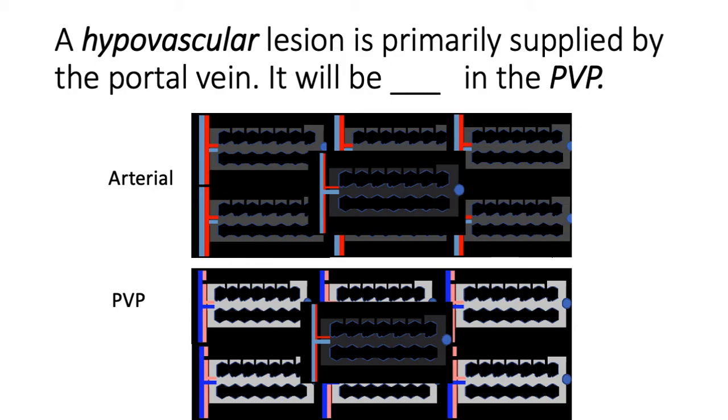So even though the hypovascular lesion, such as metastasis, for example, from colon CA, will be hypo-intense relative to the maximally enhanced normal background parenchyma.